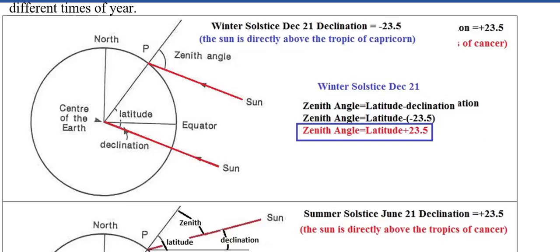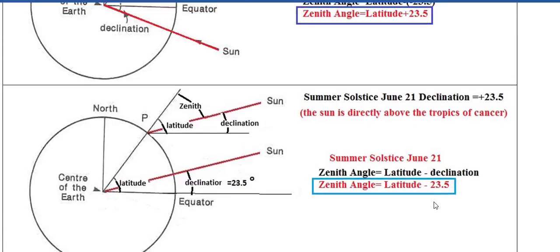Now for summertime, the person is standing here, the zenith is the straight-up direction, but for the summer solstice, June 21st, the declination is plus 23.5 degrees. The sun is directly overhead of the Tropic of Cancer. So the zenith angle is the latitude minus 23.5 degrees.